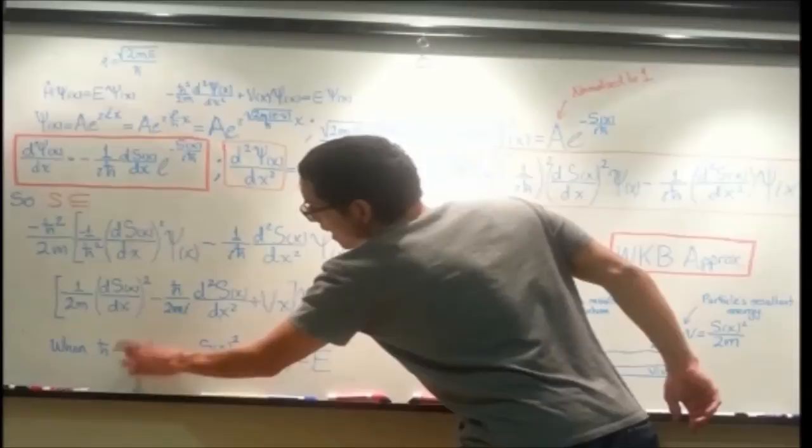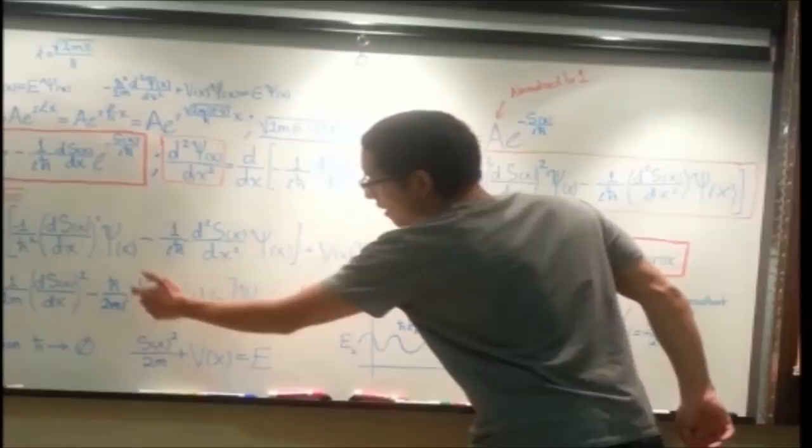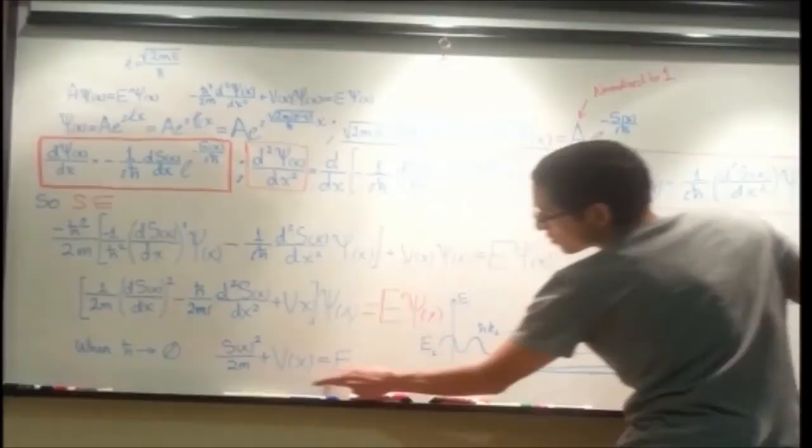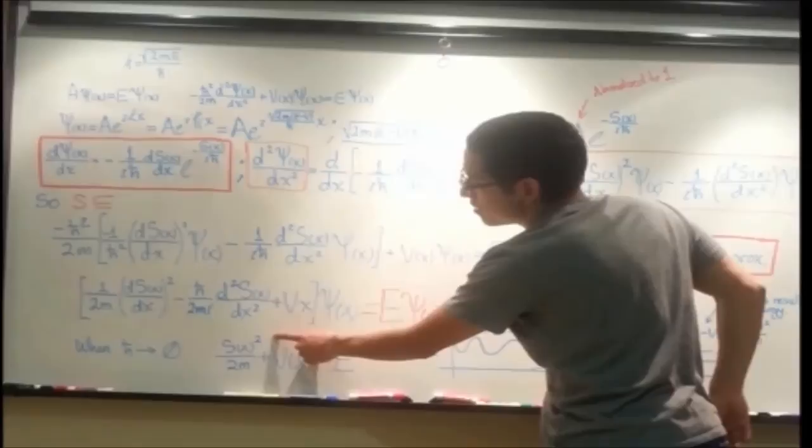So once we take the limit as ℏ goes to zero, ℏ being what takes us to the quantum size, then ℏ goes to zero makes this term go away, gives us only this right here, which is exactly, well it looks almost exactly like the p squared over 2m, which is the Hamiltonian.